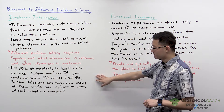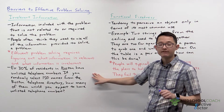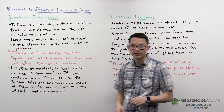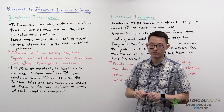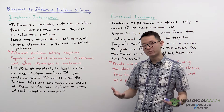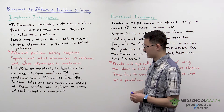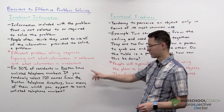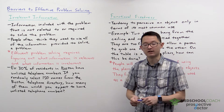As an example: 30% of residents in Boston have unlisted telephone numbers. If you randomly select 150 names from the Boston Telephone Directory, how many of these people would you expect to have unlisted phone numbers? If you look at the question, you're provided some information — 30% of residents have unlisted phone numbers and you selected 150 names from the Boston Telephone Book.